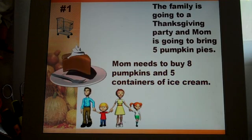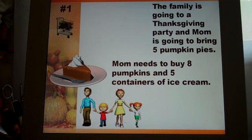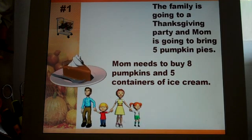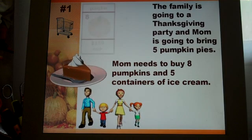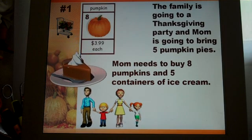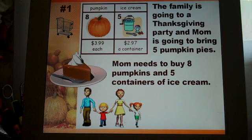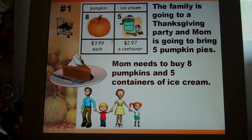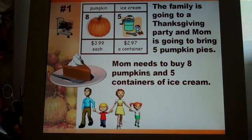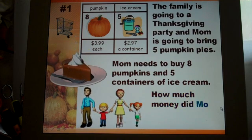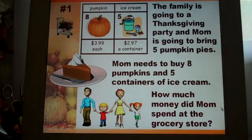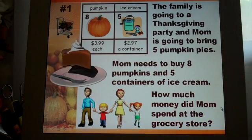Our first question: the family is going to a Thanksgiving party and mom is going to bring five pumpkin pies. Mom needs to buy eight pumpkins and five containers of ice cream. The shopping cart shows eight pumpkins at $3.99 each, and five containers of ice cream at $2.97 each. How much money did mom spend at the grocery store?